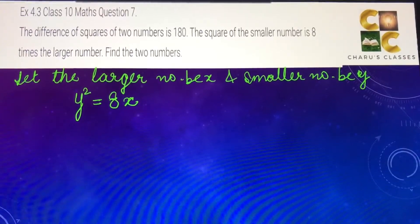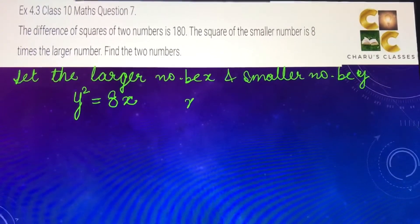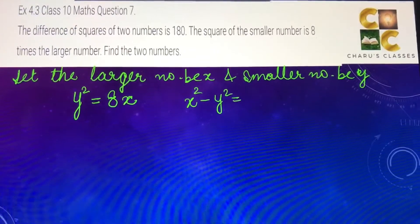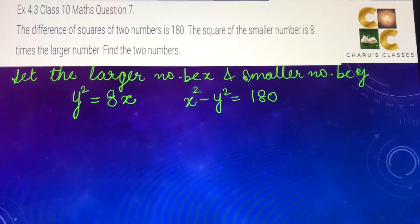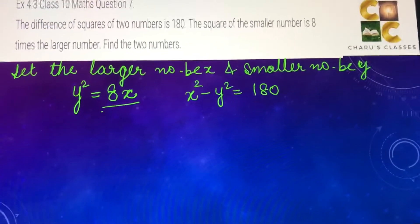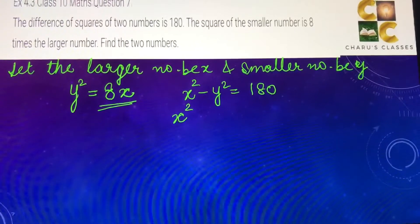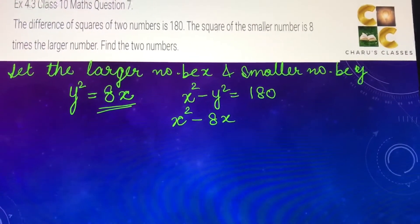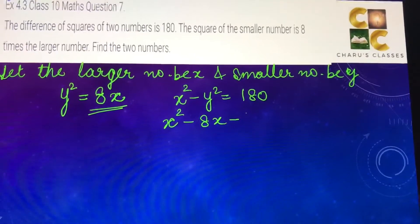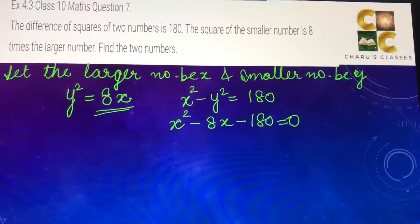The difference of square of two numbers is 180. So x² - y² is given as 180. In place of y², we are going to use 8x. So we can write x² - 8x - 180 = 0.